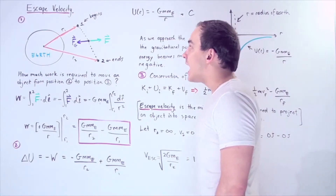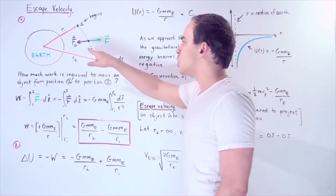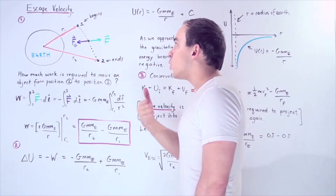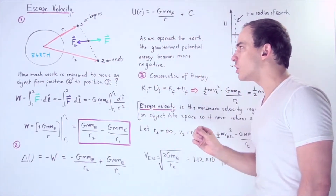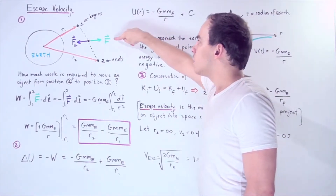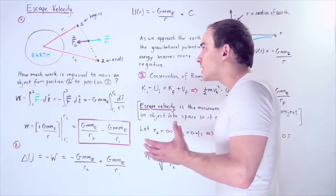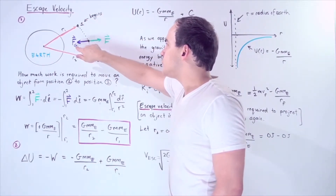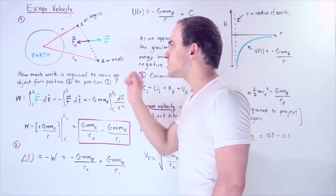At any given time along the pathway, the spaceship will feel a force due to gravity — shown with the purple FG force — that points towards the center of the Earth. So in order for the spaceship to travel from position 1 to position 2, it needs to exert a force with the same magnitude but pointing in the opposite direction, shown with the green force. These two forces must sum to zero so that our object will not be pulled towards the surface of the Earth.